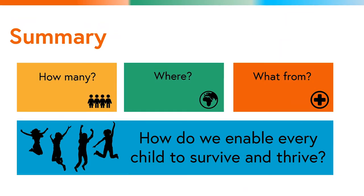During this session, we have answered the questions: how many children die — around 5.6 million every year, but many fewer than in 1990; where do they die — largely in Sub-Saharan Africa and Southern and East Asia; and what do they die from — communicable diseases, neonatal causes, and an increasing number of non-communicable and injury-related causes. We have also learnt that we need to look beyond survival to the question of how to enable every child to not just survive, but also thrive.